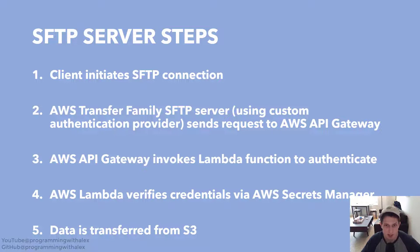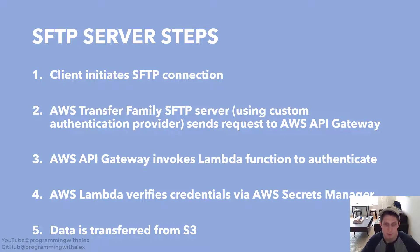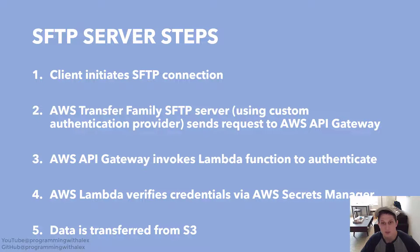Let's walk through the server steps that happen. The client first initiates an SFTP connection. Then AWS Transfer Family sends a request to AWS API Gateway to authenticate the user. The AWS API Gateway invokes the Lambda function, which is our custom authentication provider. AWS Lambda verifies the credentials against AWS Secrets Manager for the username trying to log in. If those are all correct and the user is correctly authenticated, the data is transferred from S3 that the user is permissioned to see.